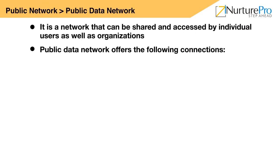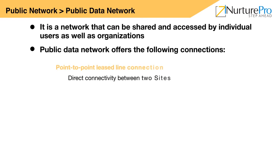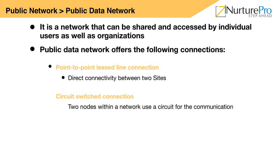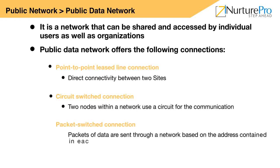A public data network is a network established and operated by a telecommunication administrator or a recognized private operating agency for the specific purpose of providing data transmission services for the public. It offers the following connections: point-to-point leased line connection, where two areas are connected using a leased line circuit and considered economical for connections between two LANs; circuit-switched connection, which is not widely used these days; and packet-switched connection, where packets of data are sent through the network based on the address in each data packet. Packet switching services are offered by the X.25 network, which works as per the X series recommendation of ITU-T.